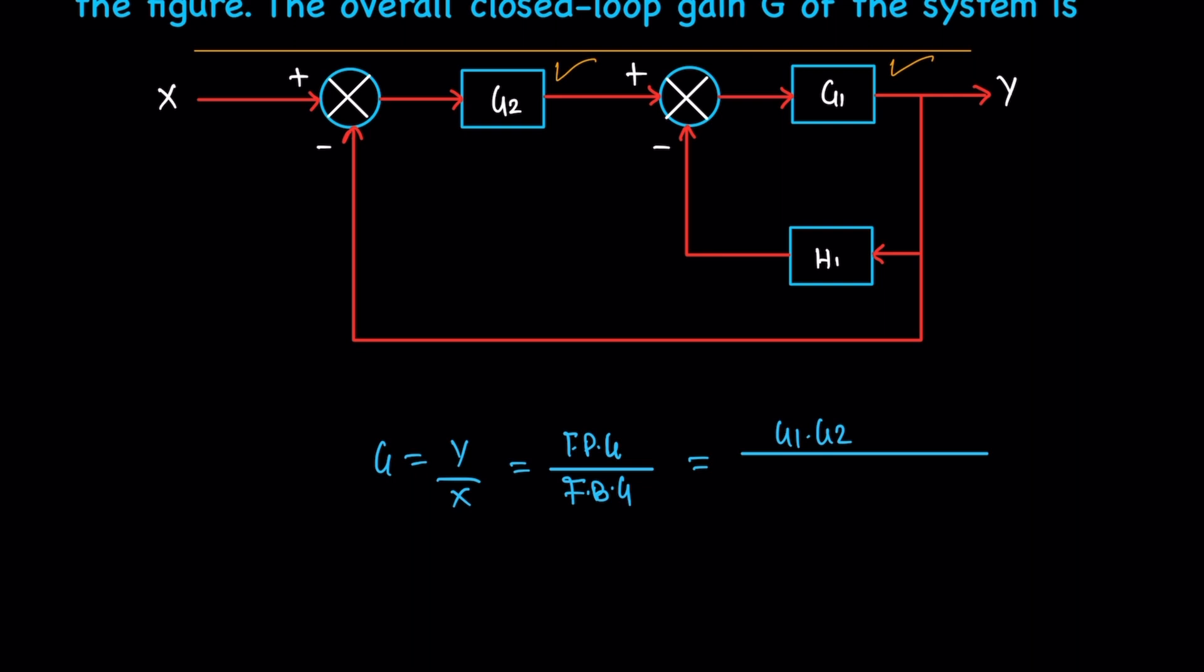There are two summing points, giving us two feedback terms. Based on the first summing point, the feedback value is the product of G2 and G1, and here there is no block which means 1.